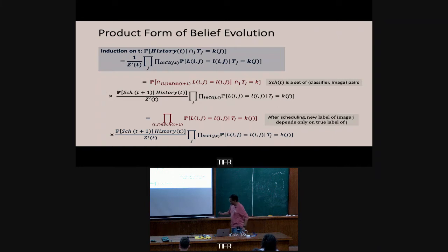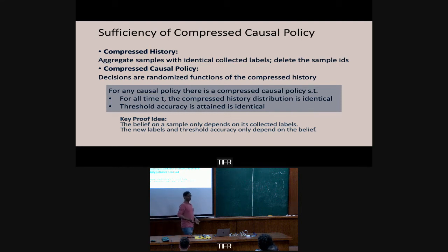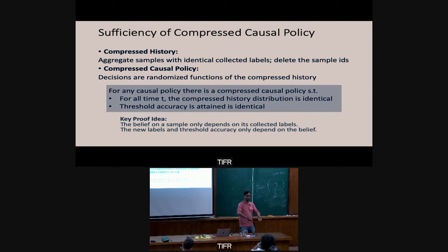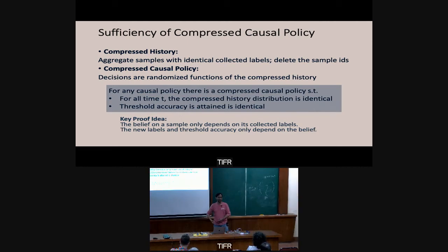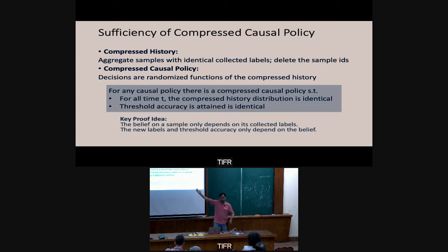Since belief is product form, there's an additional result: compressed history is sufficient. At any point, all I need is what labels each image has collected. If two images have the same labels, they're equivalent — I can't distinguish them. So I just need to keep counts of states, where state is simply the set of labels received and from whom. This answers the question of what state to track for assignment decisions. Note: at this point I'm still assuming I know the confusion matrices and the generative model.